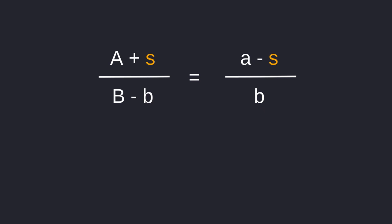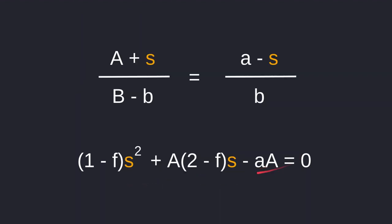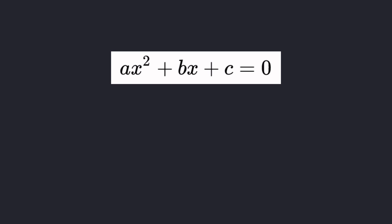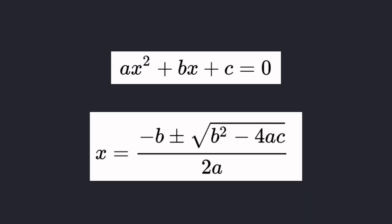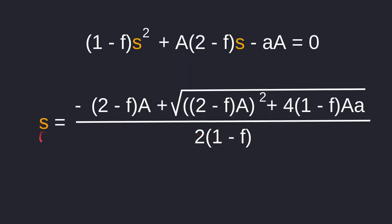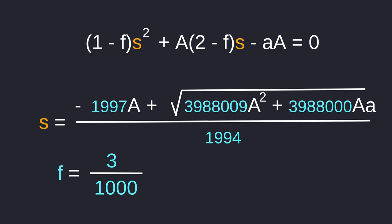From this equation we can solve for S. I'll spare you the math. Finally we get a quadratic equation in terms of S. For a quadratic of the form AX² + BX + C = 0, X equals negative B plus or minus the square root of B² minus 4AC over 2A. Plugging this into our formula, we get the equation for S. We can further simplify by replacing F with the actual Uniswap trading fee of 0.3%, giving us the final equation for S — the optimal amount of token A to swap to token B to maximize liquidity.